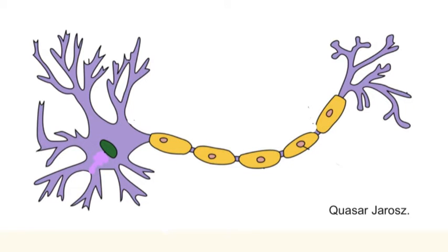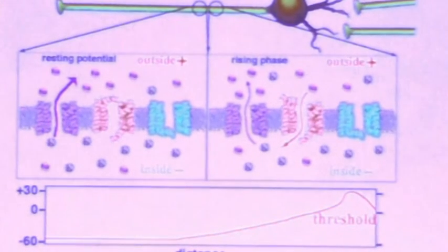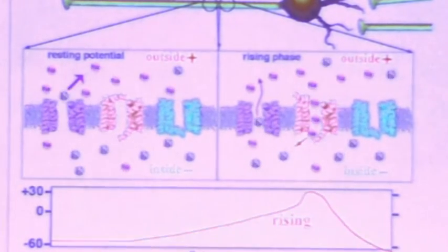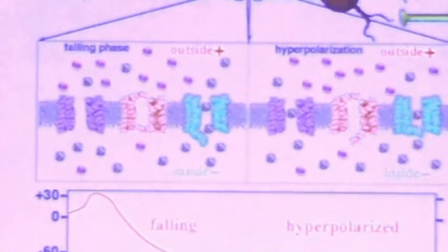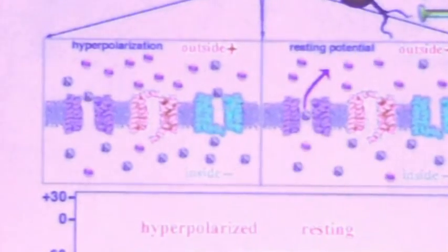In a myelinated neuronal axon, the speed at which an action potential travels is closely related to the rate of diffusion of the ions inside the axon. So we have a direct link between quantum effects and neurophysiology.